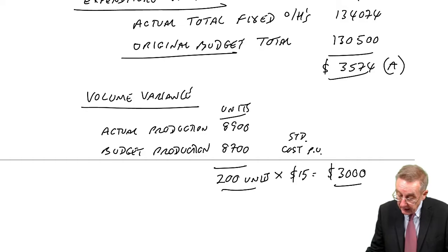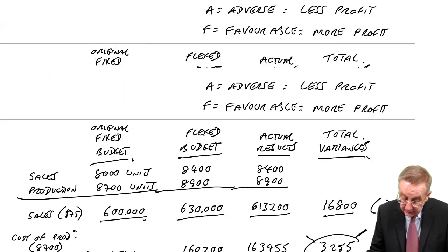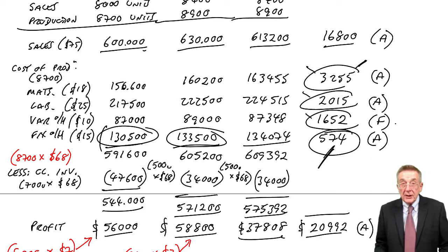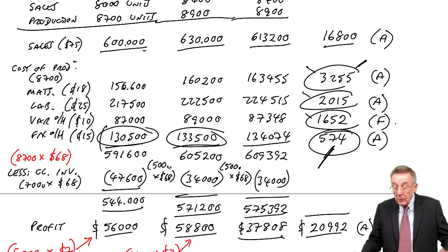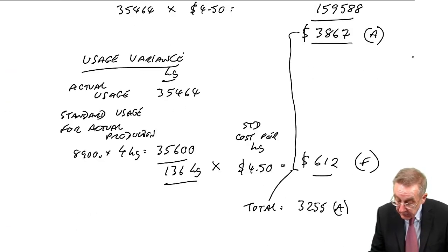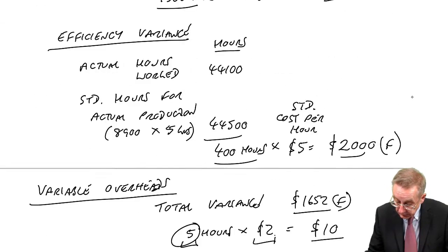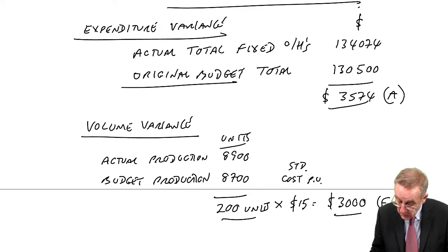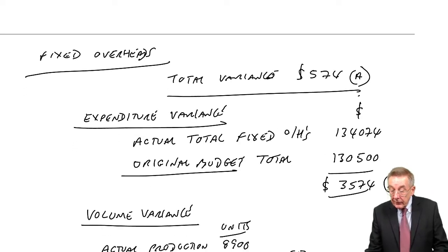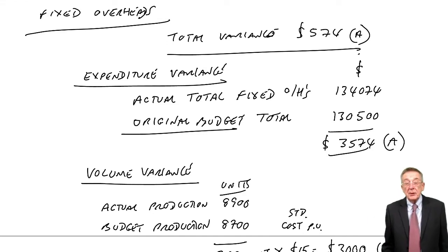Just look back. That's exactly what had happened. By absorbing 15 for every unit produced, we've ended up charging 3,000 too much. The real profit, we should have charged less and therefore had more profit. This is favourable. And of course, the two together do work. $3,574 adverse and $3,000 favourable does explain the total of $574 adverse.